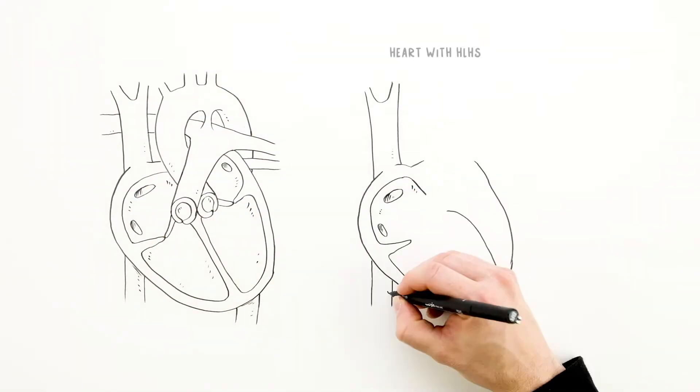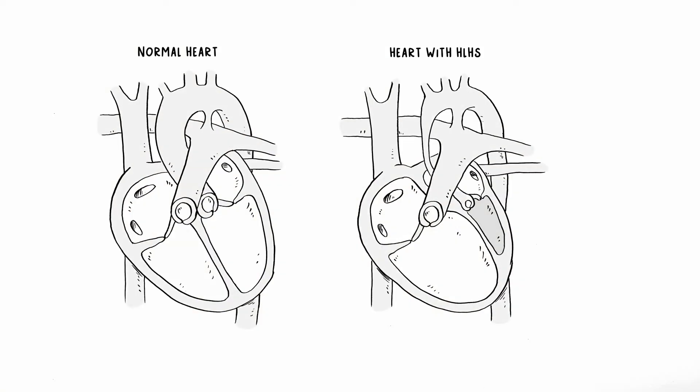In a heart with HLHS, the left ventricle and left-sided heart valves are underdeveloped, affecting normal blood flow through the heart. Red blood returning from the lungs can't get through the left ventricle, so it's forced to cross over to the right side of the heart, mixing with the incoming blue blood.